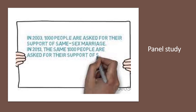A panel study involves asking not a similar but the same sample of respondents the same questions at two or more points in time. The goal is to see if individuals themselves have changed over time. Using the same example, you would survey newlyweds in 1986, then survey those same individuals in 1996, and again in 2006 — to assess the attitude shift as individuals get older. In a panel study you ask the same individuals the same questions over time; in a trend study you ask similar groups the same questions over time.